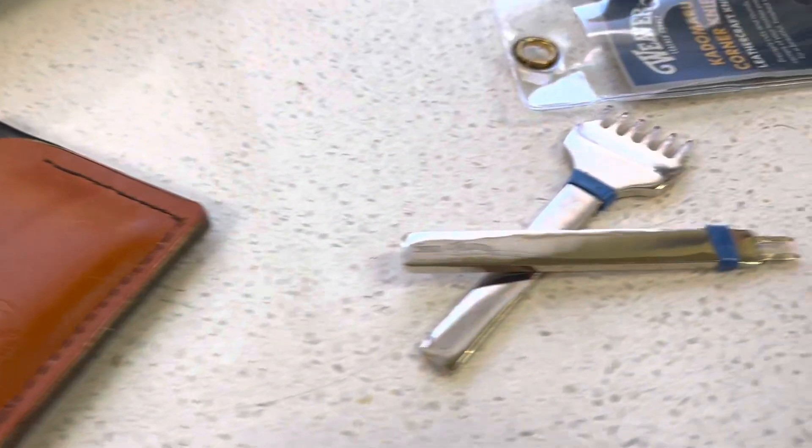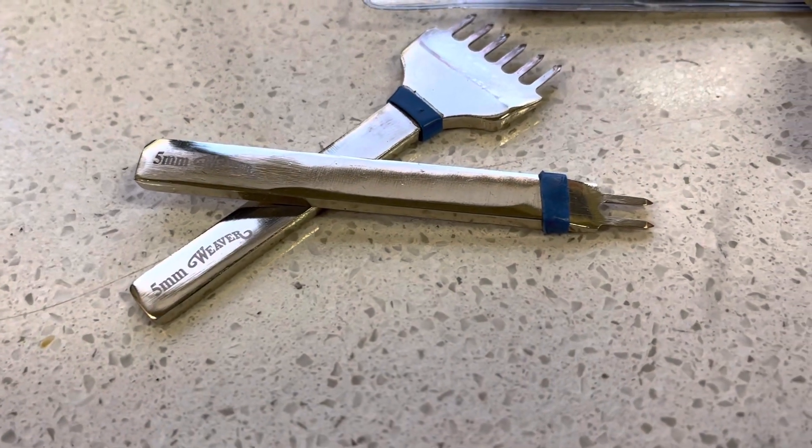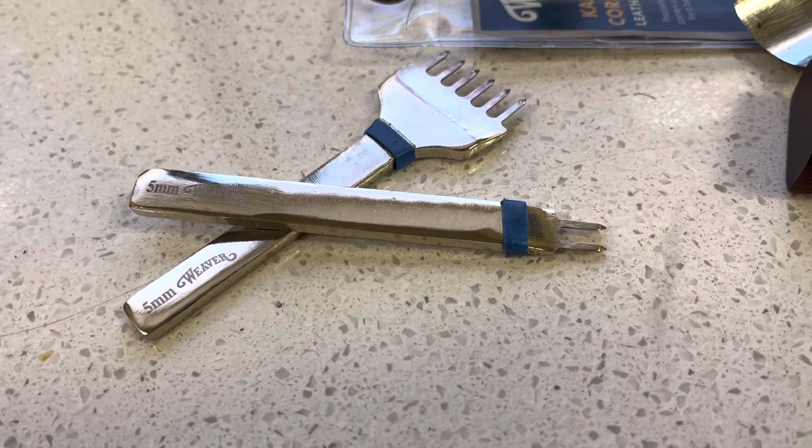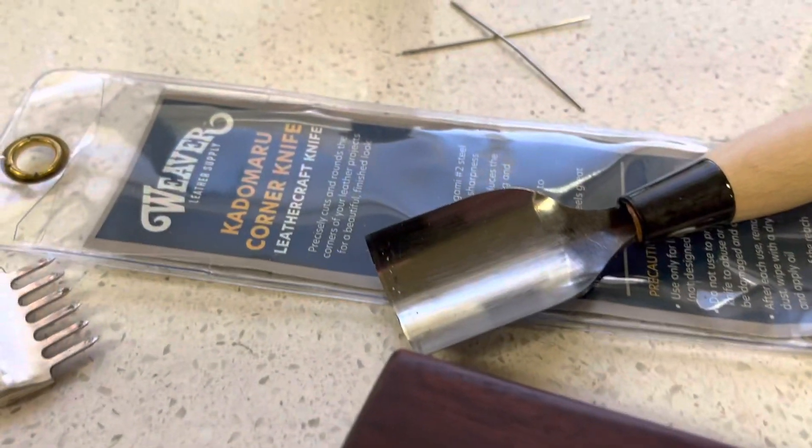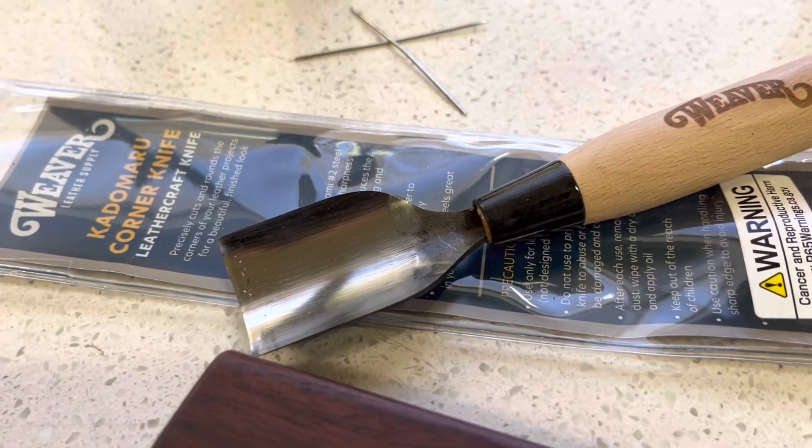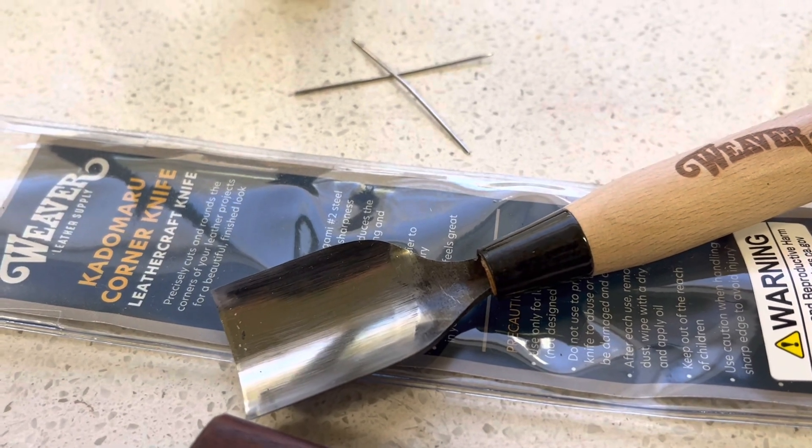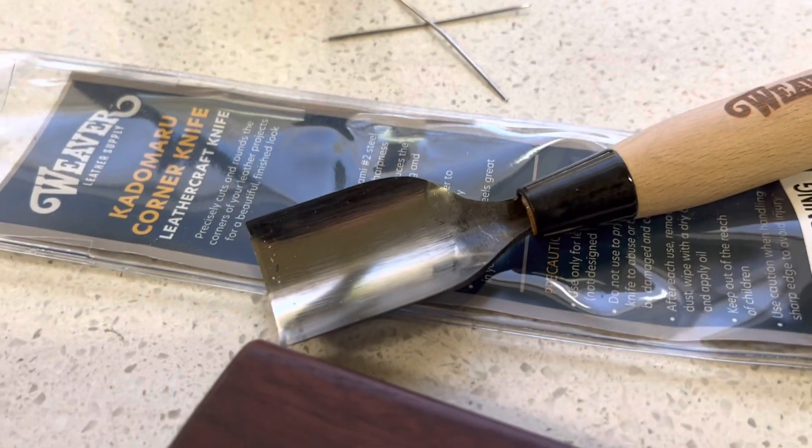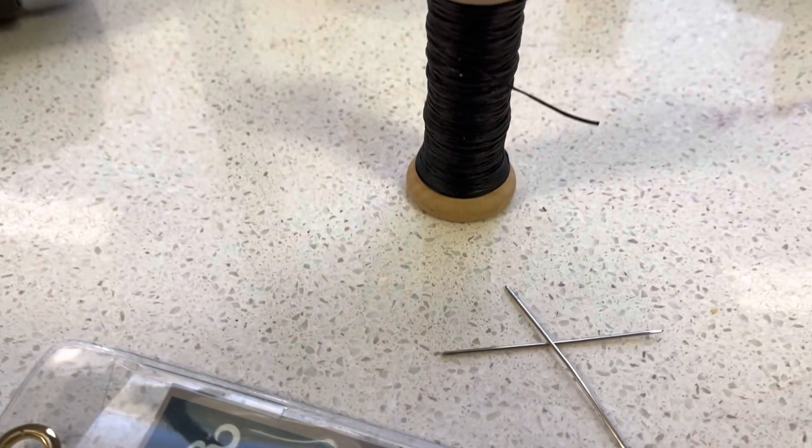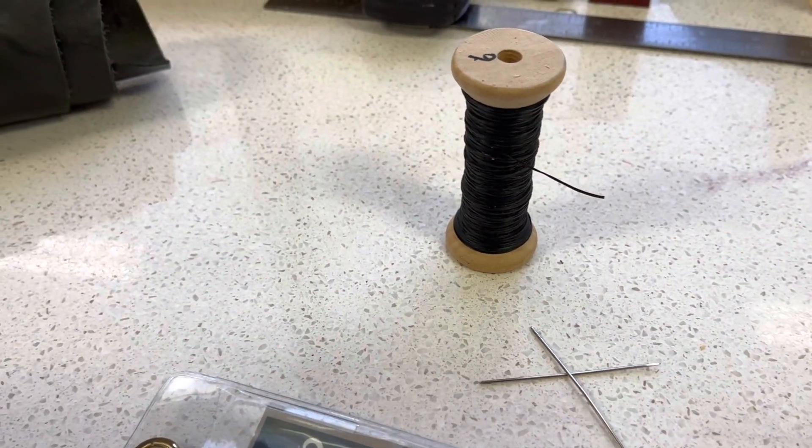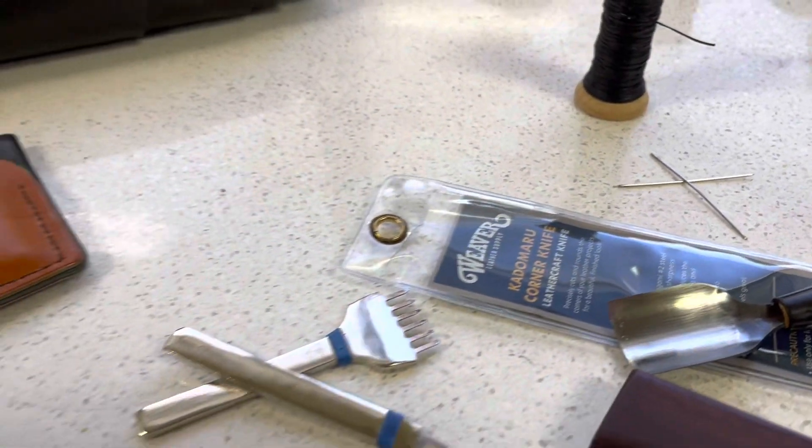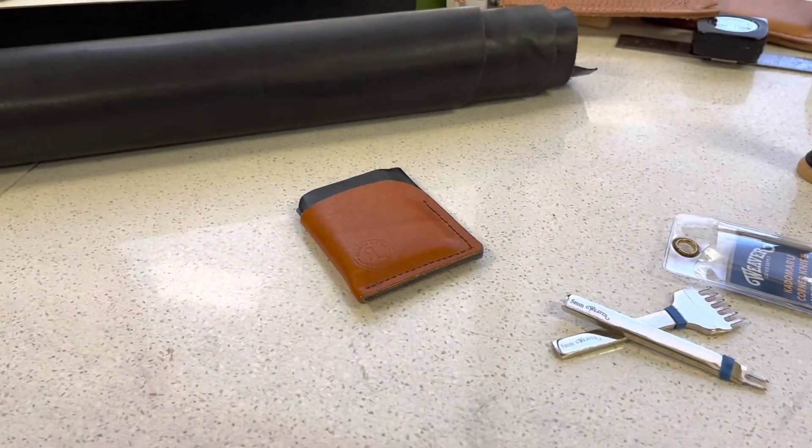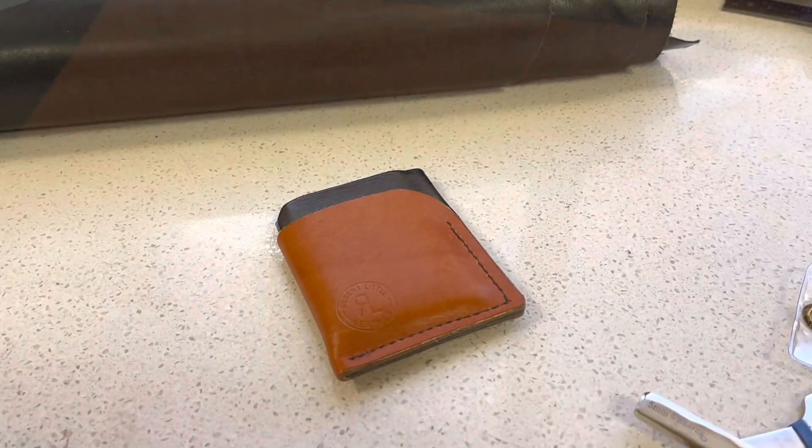I'm going to use these tools here: the five millimeter stitching chisels from Weaver Leather. I'm going to use this corner knife to cut the corner - you could use a utility knife or such to cut the corners, but this makes a nice continuous cut. John James needles, and I'm going to put it all together with this 0.06 Tiger Ritza thread in black. So that's today's project on the workbench. Follow along, hope you enjoy.